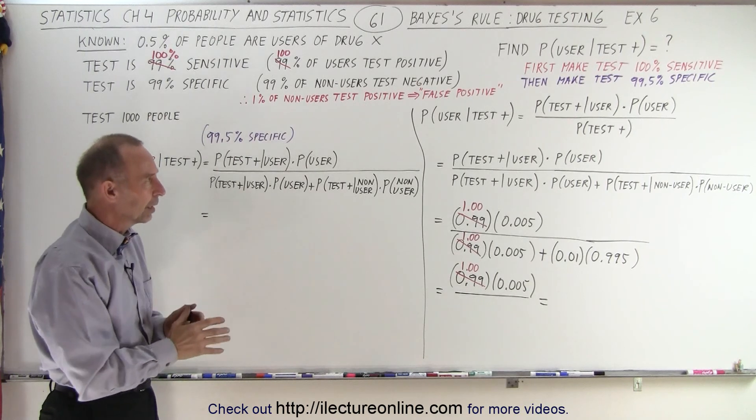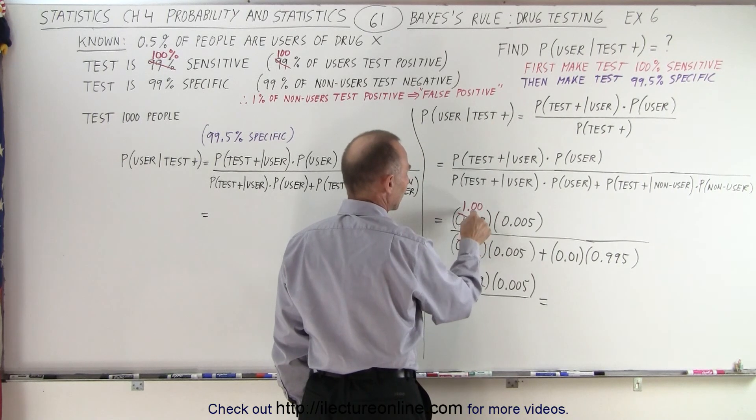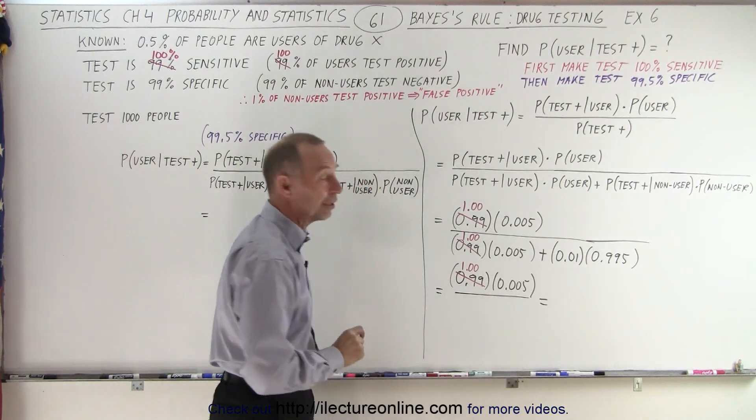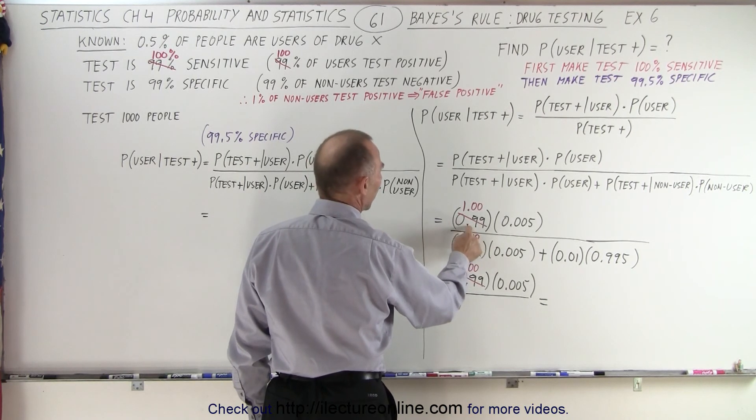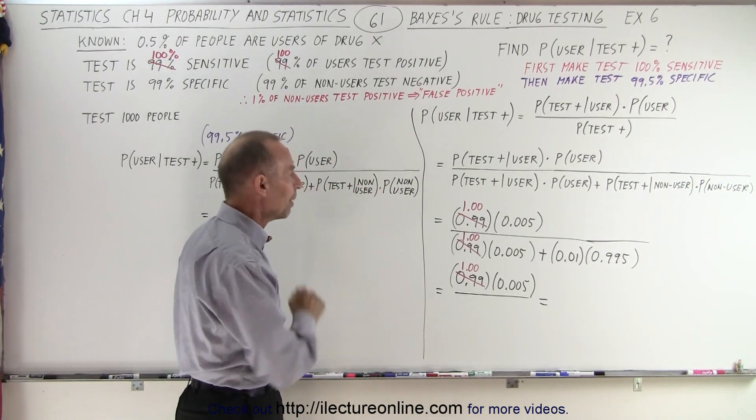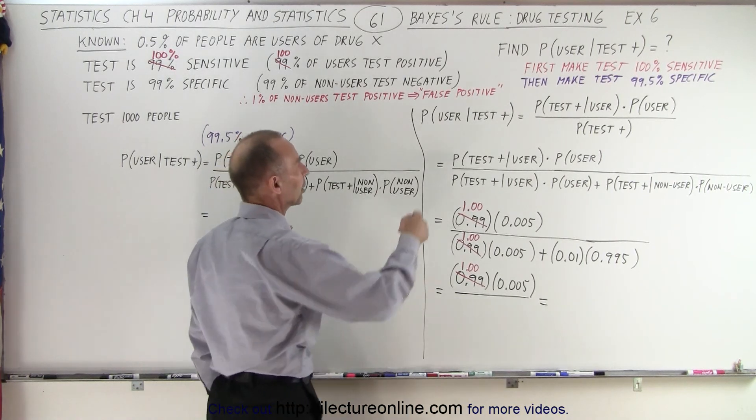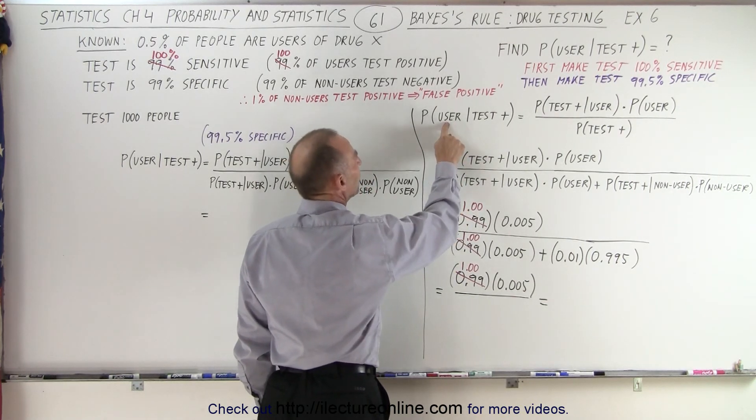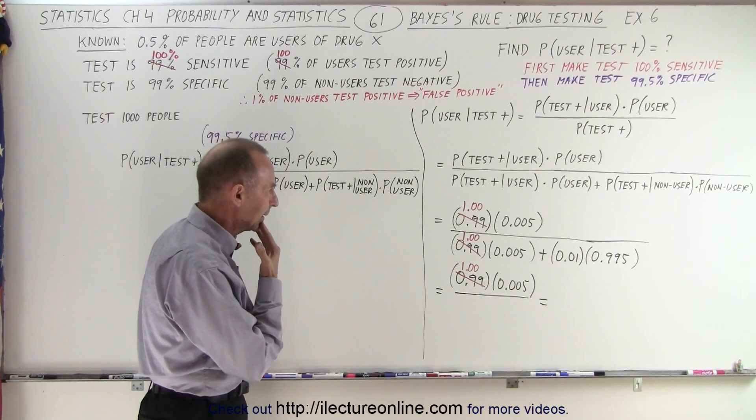I worked ahead already a little bit, and so first we're going to make the test 100% sensitive. So instead of 0.99 here we get 1.0. Instead of 0.99 we get 1.0 and we do it again over there. That's the change. This is the probability that the person will test positive if they're a user. If the test is 100% sensitive that means every user will test positive. So how will that improve the results of the test? In other words, how that will increase the number, the percentage or the probability that the person will be a user if the person tests positive.